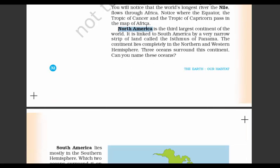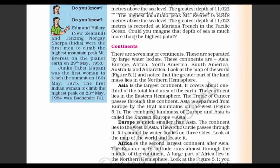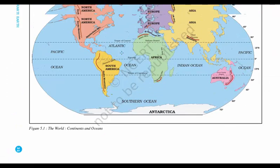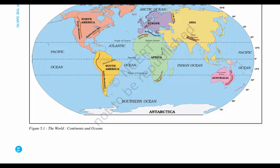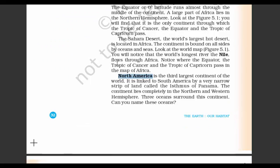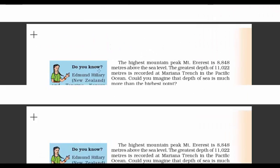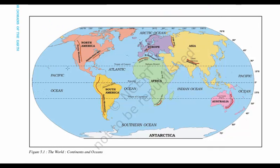Now let's go to North America. It is the third largest continent of the world, and it has a small linkage with South America. The place where this linkage happens is called an Isthmus. North America is also surrounded by three oceans: the Pacific, Atlantic and Arctic.